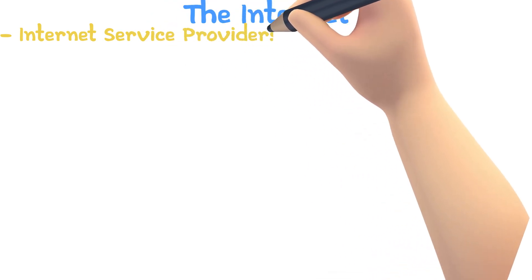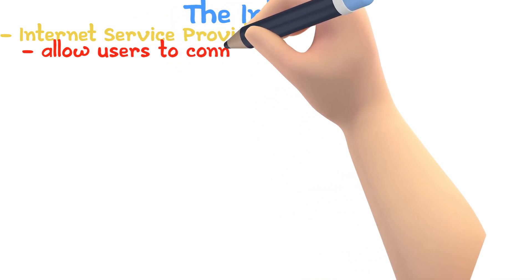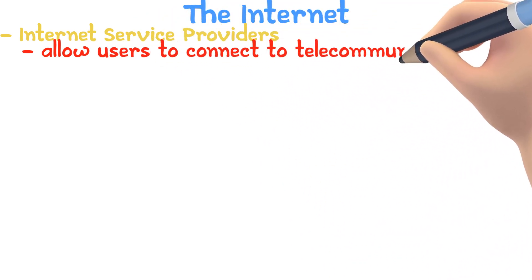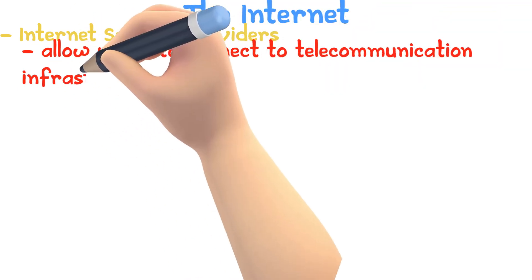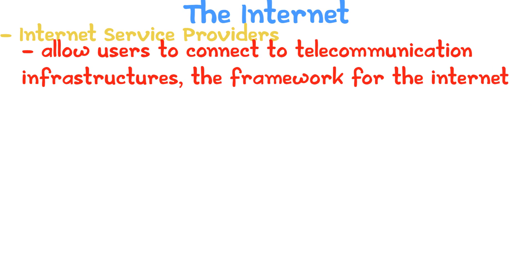Internet Service Providers (ISPs) allow users to connect to telecommunications infrastructure — the framework for the internet. Commercial ISPs charge a fee to connect to the internet, while there are some companies providing free access as part of community service.